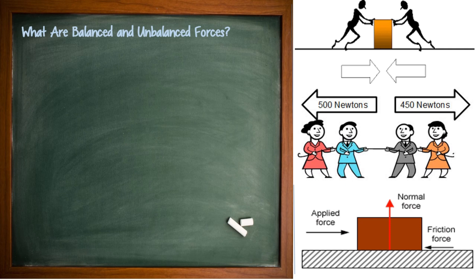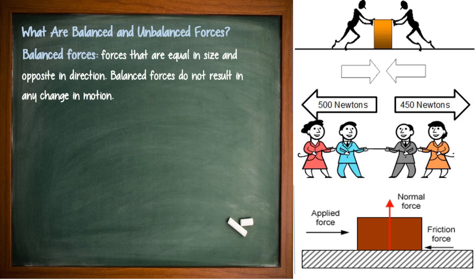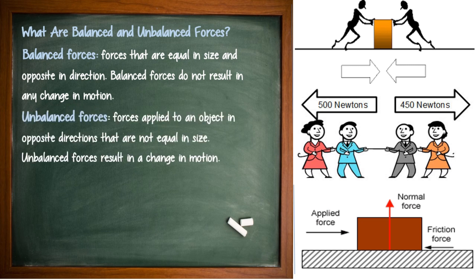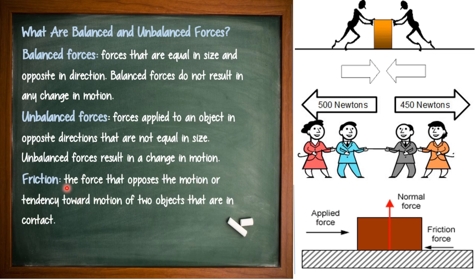What are balanced and unbalanced forces? Balanced forces are forces that are equal in size and opposite in direction. Balanced forces do not result in any change in motion. Unbalanced forces are forces applied to an object in opposite directions that are not equal in size. Unbalanced forces result in a change in motion. Friction is the force that opposes the motion or tendency towards motion of two objects that are in contact.